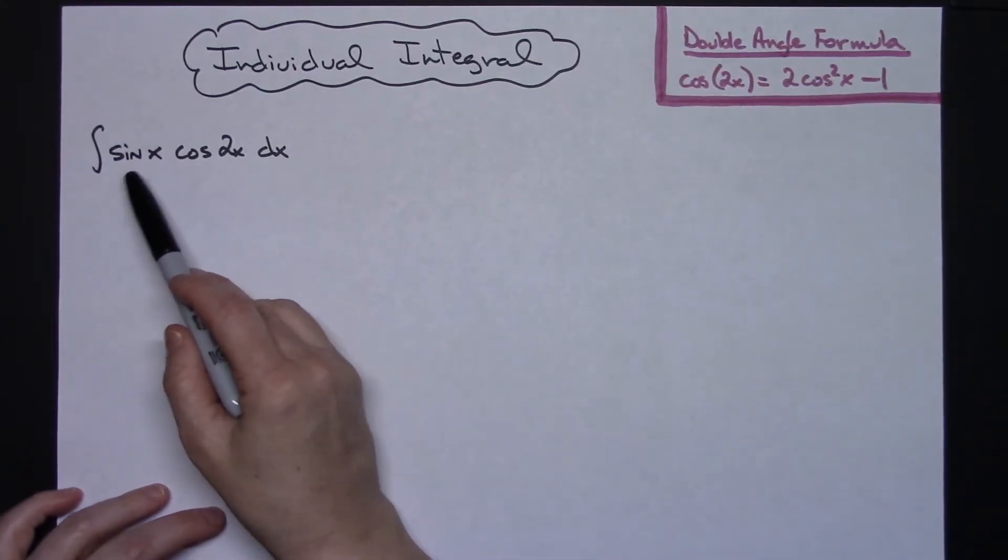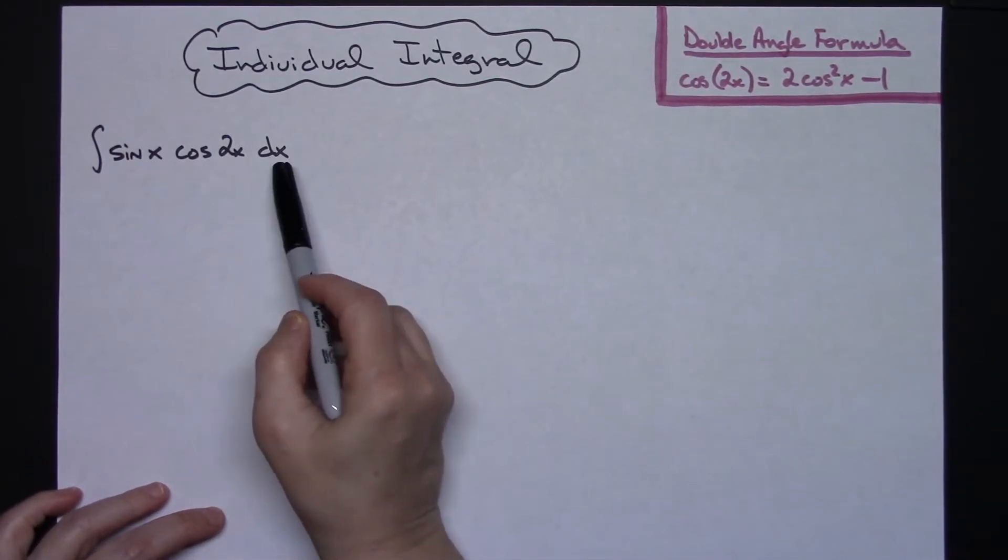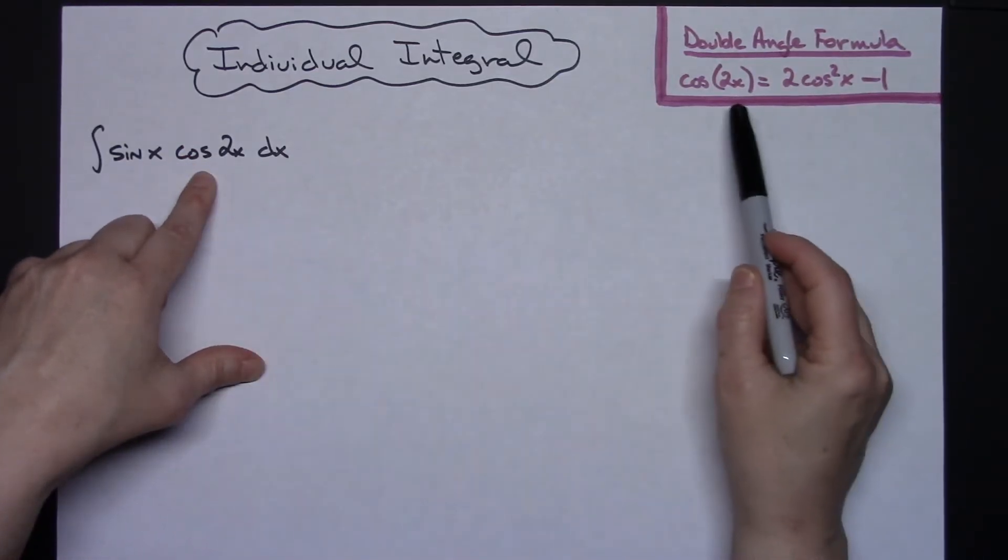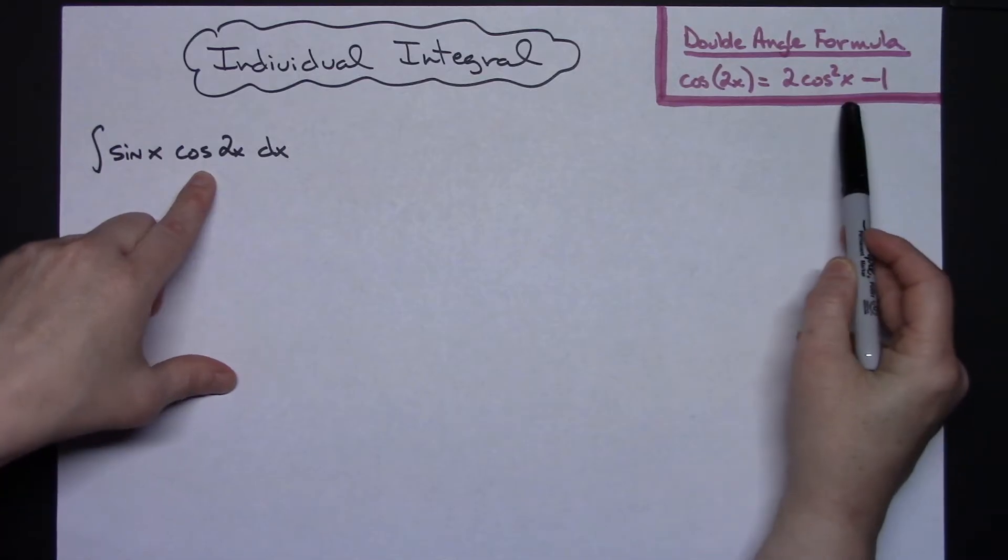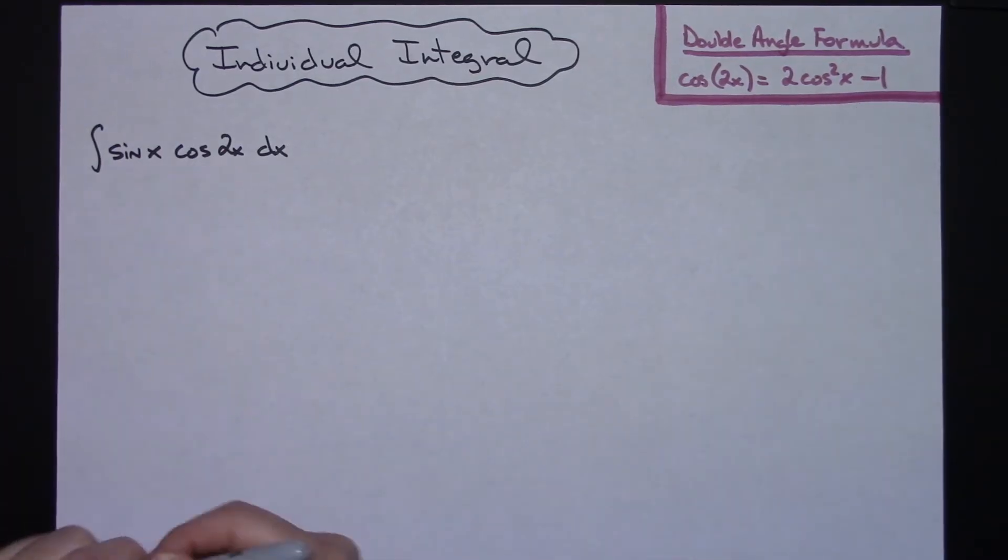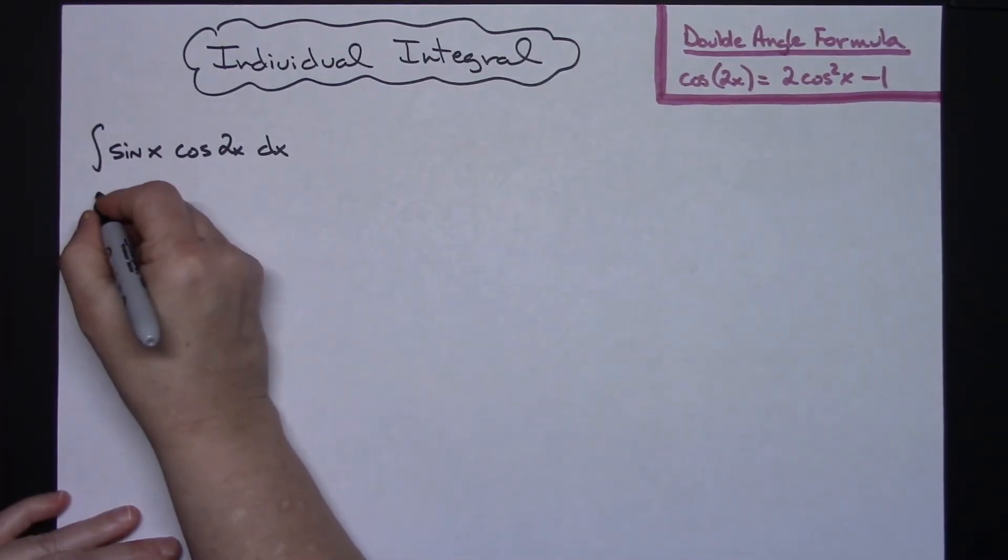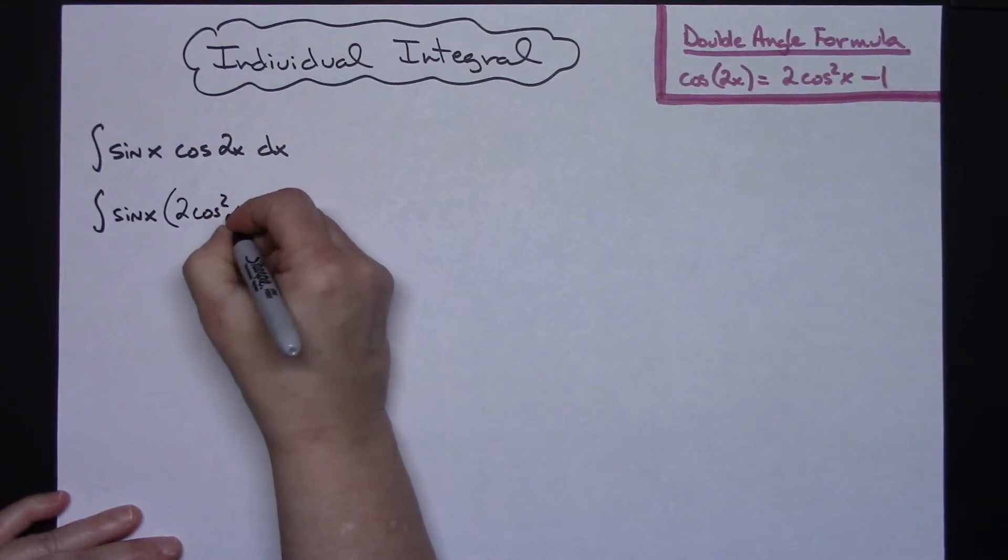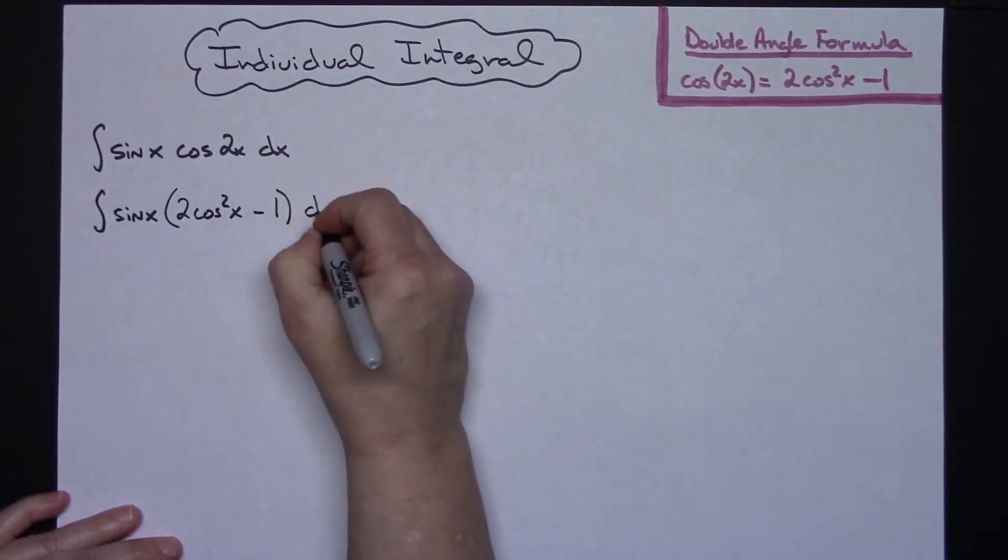My integral that I'm going to work out here is sine x cosine 2x dx. Right off the bat I'm going to look at this cosine 2x and substitute my double angle formula for that. So then I'm going to have the integral of sine x times 2 cosine squared x minus 1 dx.